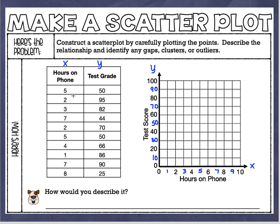Let's start putting some points on the graph. Our first one is five hours on the phone and a test grade of 50, so I go to five on the bottom and up to 50. Next is two hours on the phone and we go up to 95 — that's right between 90 and 100. Next is 3 and 82 — three hours on the phone and we go to 82, which is between 80 and 90 but closer to 80. You're just estimating — it's a scatterplot, it doesn't have to be perfect.